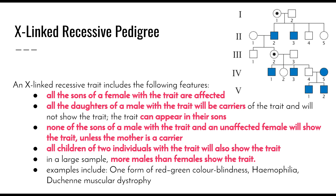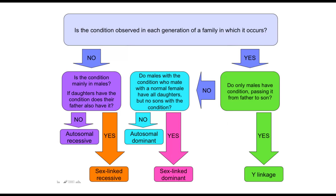None of the sons of a male with the trait and an unaffected female will show the trait unless the mother is a carrier — if she is, there is a 50% chance the son will have it. All children of two affected individuals will show the trait. In a larger sample, more males than females will show the trait because males don't have a second X chromosome carrying the dominant allele. Examples include red-green colour blindness, haemophilia, and Duchenne's muscular dystrophy — which explains why far more males have red-green colour blindness than females.